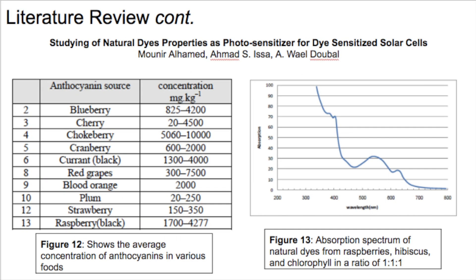Alhamid et al. evaluated various anthocyanin dyes in their experiment. First, they looked at the concentration of anthocyanins within several organic substances. Anthocyanins are the photoabsorbent material found in some fruits. It was found that chokeberries had the highest concentration of anthocyanins, shown in Figure 12. This experiment also looked at the absorption spectra of various anthocyanin dyes extracted from different sources. Figure 13 shows that by combining chlorophyll, raspberries, and hibiscus extract, the scientists were able to expand the absorption spectrum.